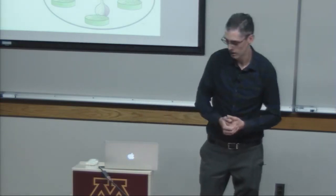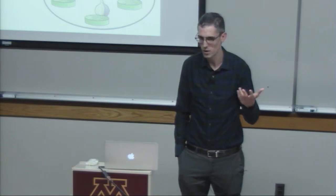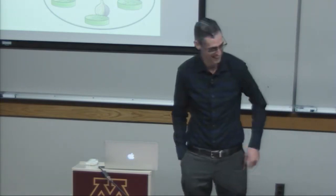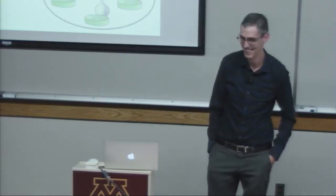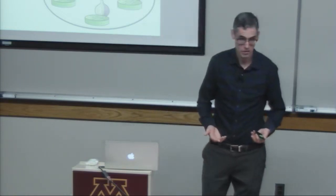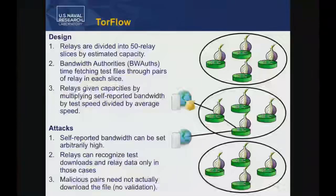TorFlow is clearly not very secure. You're multiplying by the self-reported bandwidth, which you can set arbitrarily high, getting whatever measured multiple times that inflated value. Also, you may be able to tell when you're being measured — the bandwidth authorities are well-known and hard-coded, and the test files are easy to identify. So you can send traffic only when being tested and never otherwise, making it very cheap. Additionally, TorFlow didn't validate that you were actually sending the file it wanted, so if you controlled the entire circuit you could skip the download and save half the cost.